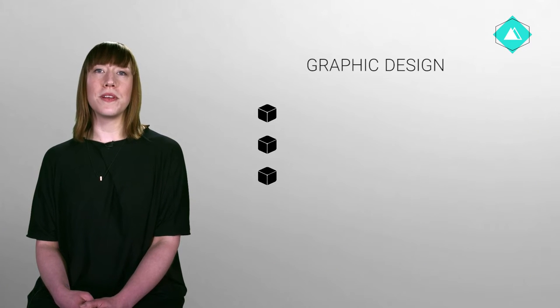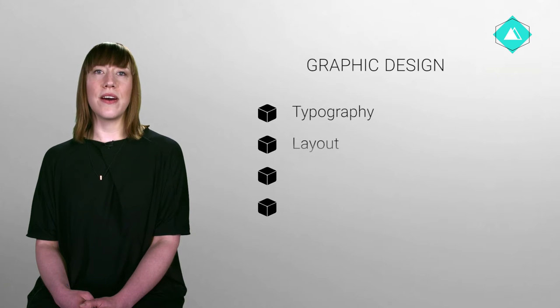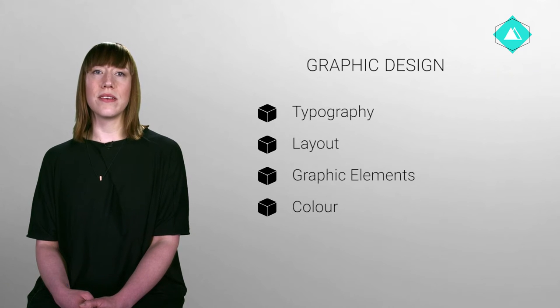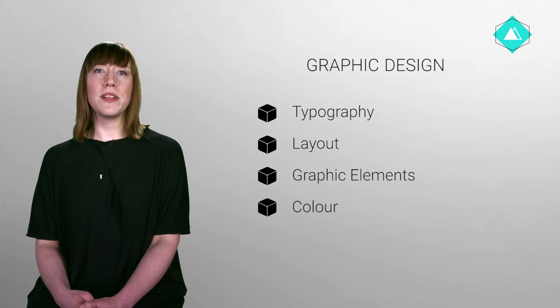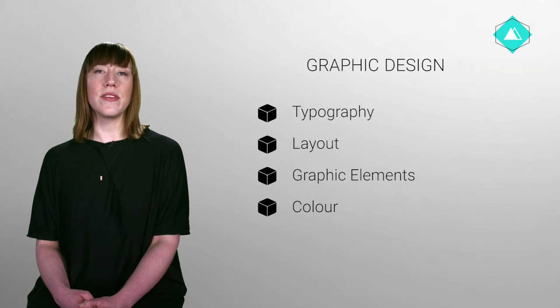To put it simply, a graphic design is composed from four building blocks: typography, layout, graphic elements, and color. These building blocks are selected according to what will best solve the design problems set out in the design brief.